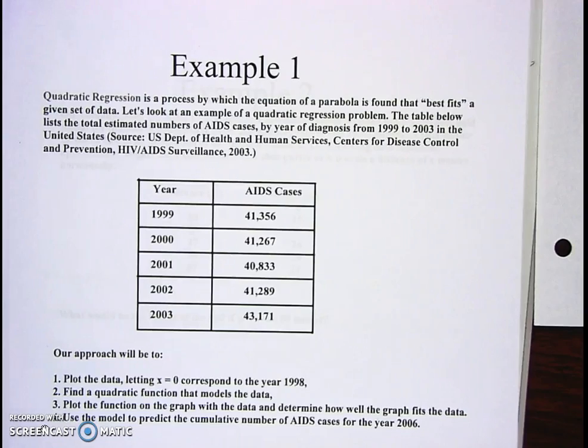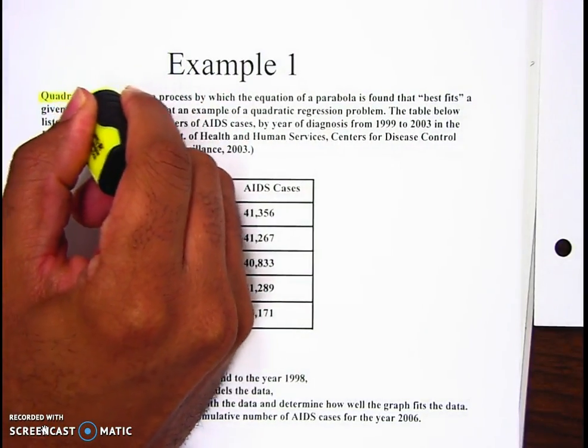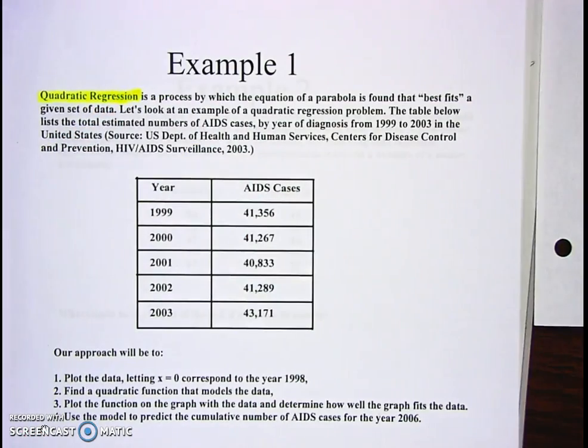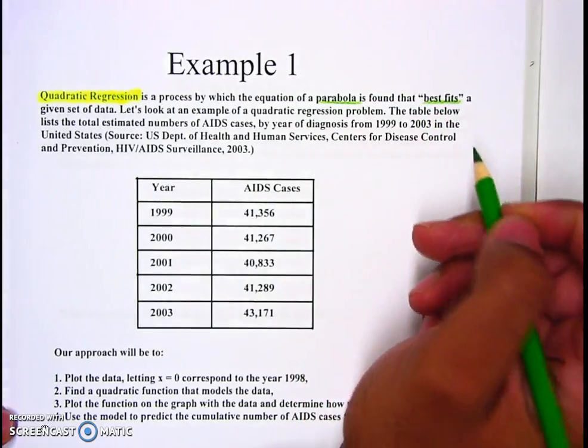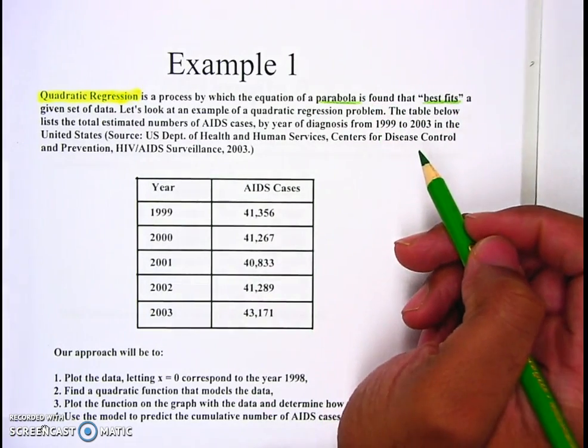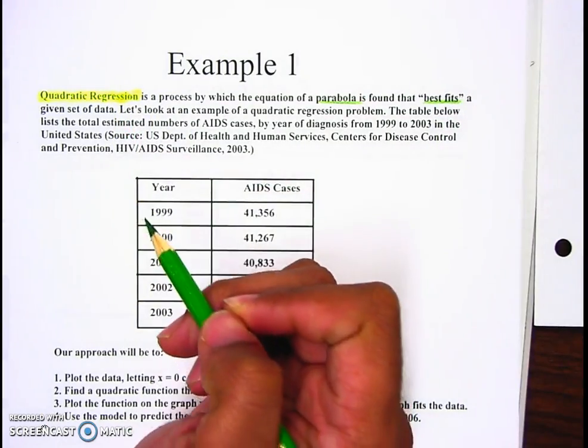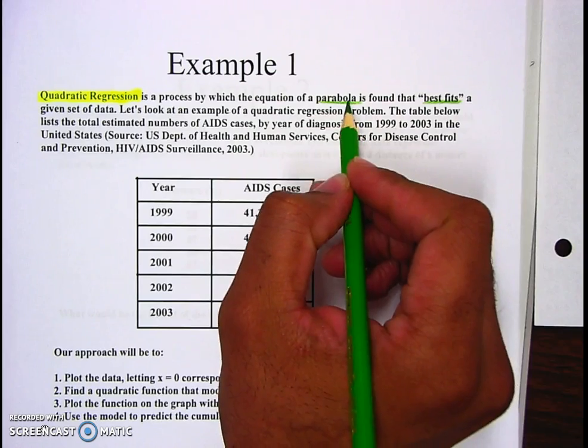The first thing for Example 1 is quadratic regression - that's a vocabulary word that's going to be on the word wall. Quadratic regression is a process by which the equation of a parabola is found that best fits a given set of data. The key terms you need to know are parabola and best fits.